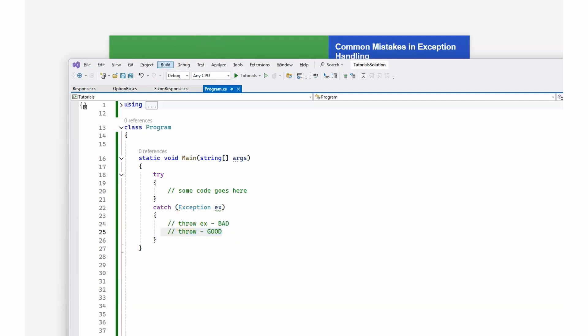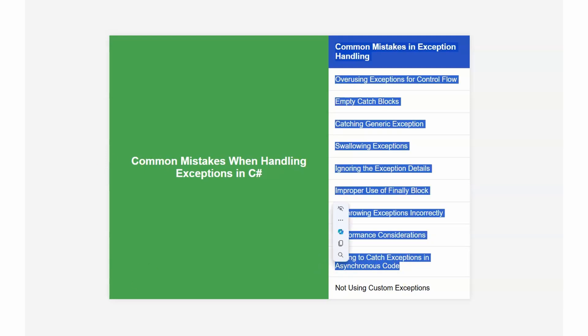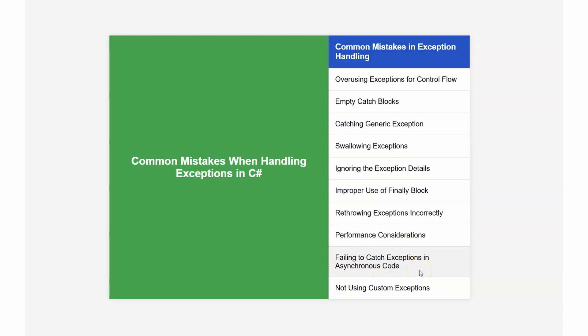Finally, failing to catch exceptions in asynchronous code is another common mistake — this may warrant a separate video. If you don't properly catch exceptions in async code, it can lead to unhandled exceptions that crash the application, since exceptions can propagate up the call stack and bypass traditional try-catch blocks. You should always await your asynchronous method executions and deal with exceptions accordingly.